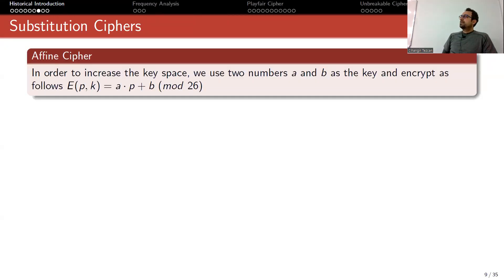You can make things more complicated since key space is really small at 25. One can increase the key space using an affine cipher. To increase the key space, we use two numbers a and b as the key and encrypt as follows: whenever you have letter p, if you're using English alphabet represented from 0 to 25, you multiply with a then add b.